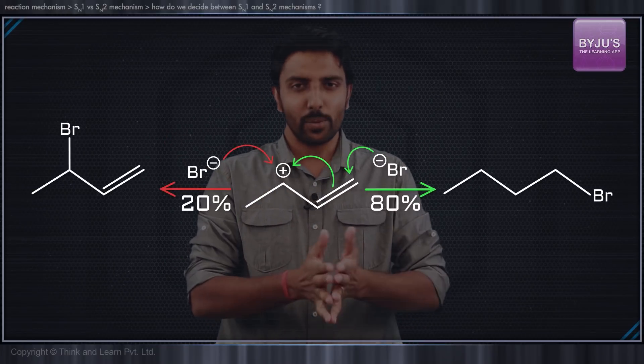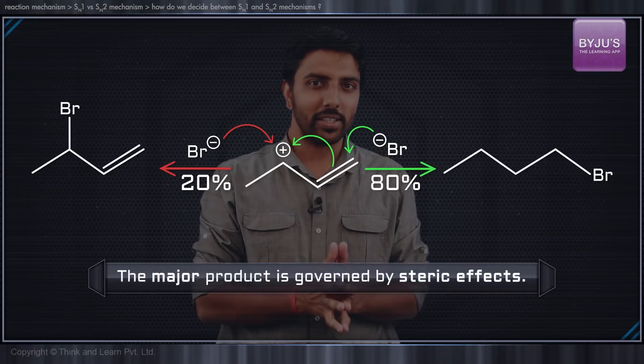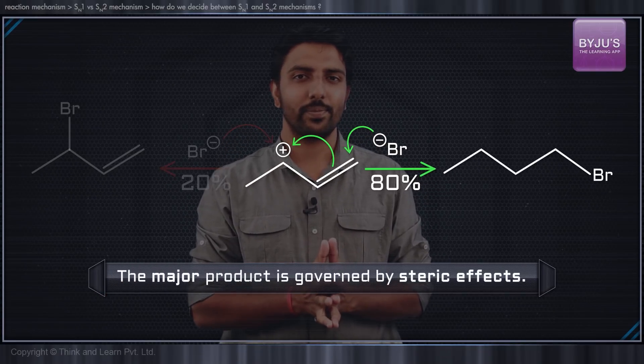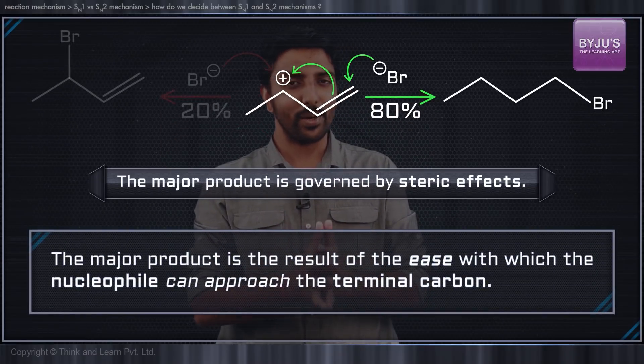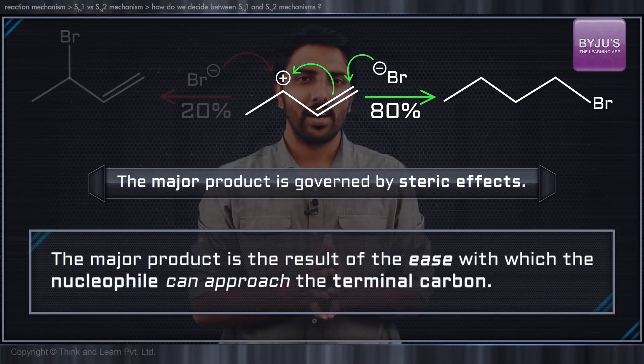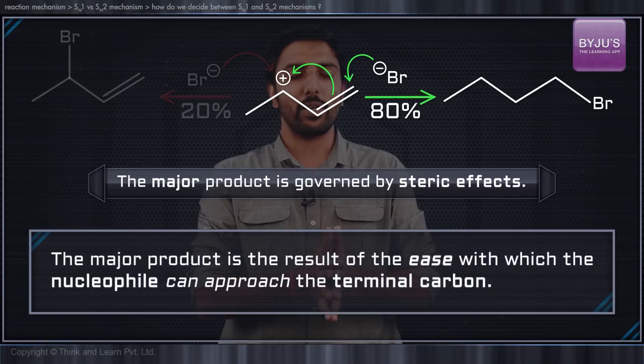Although this mechanism is SN1, the major product is governed by the steric effects. In other words, the major product is a result of the ease with which the nucleophile can approach the terminal carbon.